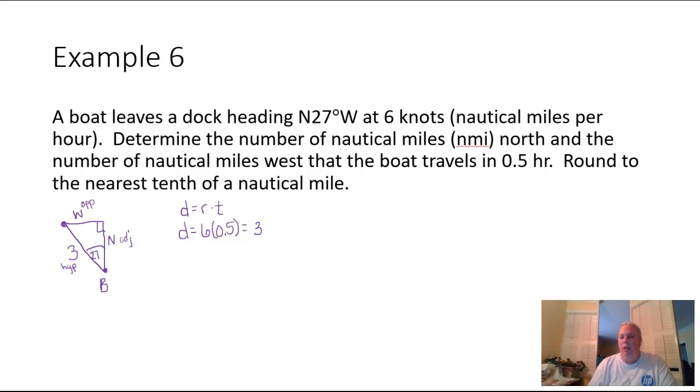In order to solve for N, we're going to have to use the cosine function because that's the one that involves the adjacent side and the hypotenuse. So the cosine with respect to our 27 degree angle is going to be our adjacent side, N, divided by the hypotenuse, 3.